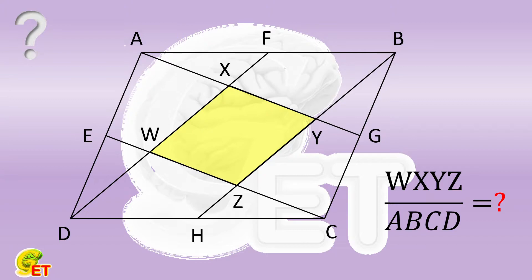The task includes two parts. First, it is asked to prove that WXYZ is a parallelogram. And second, it is asked to calculate the ratio of the area of this parallelogram WXYZ to that of the parallelogram ABCD. Why not give a try, and we will come back soon.